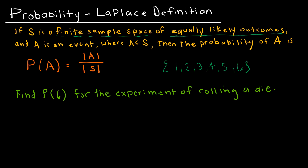A is an event where A is one of the events that belongs to the sample space. Then the probability of A is the number of elements in A over the number of elements in S. For instance, if I'm looking at the probability of rolling a 6, we write it P(6), and that tells us 1 of my items is a 6 out of 6 total in the sample space.